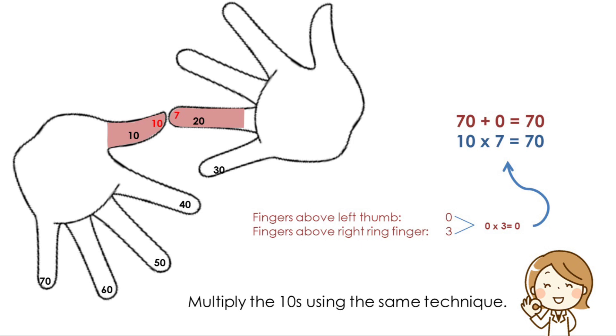Next, count the number of fingers above the touching fingers on your right and left hand. There should be 0 on your left and 3 on your right. Now multiply 3 times 0, which is 0, and add 70 to 0 for your answer. The answer to 10 times 7 is 70.